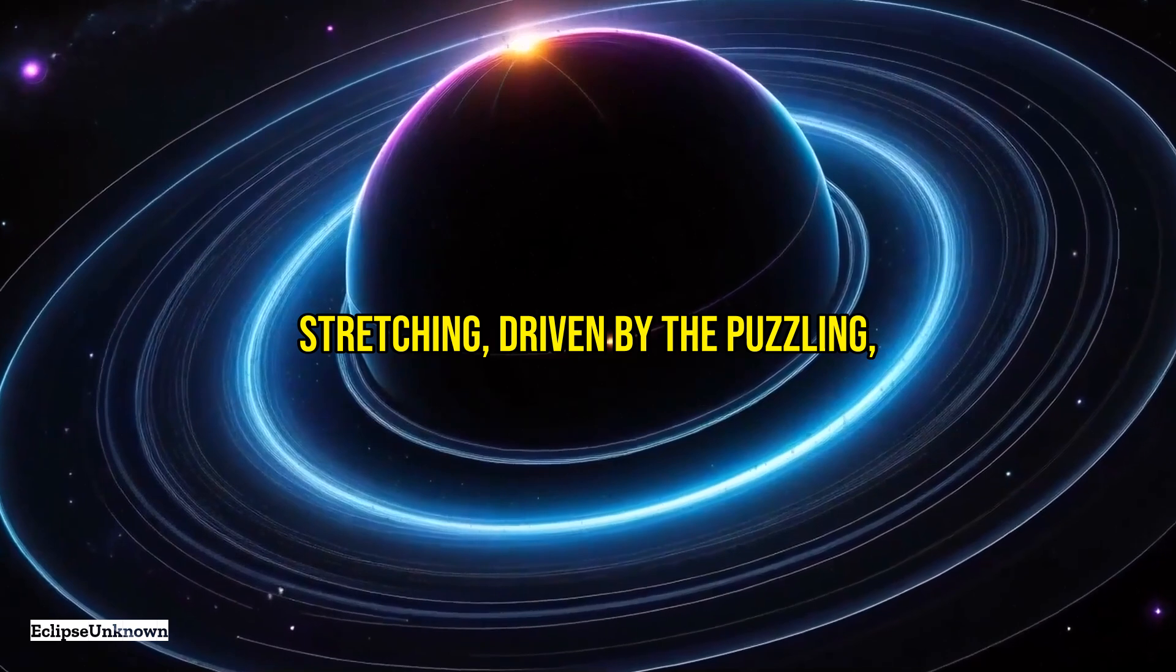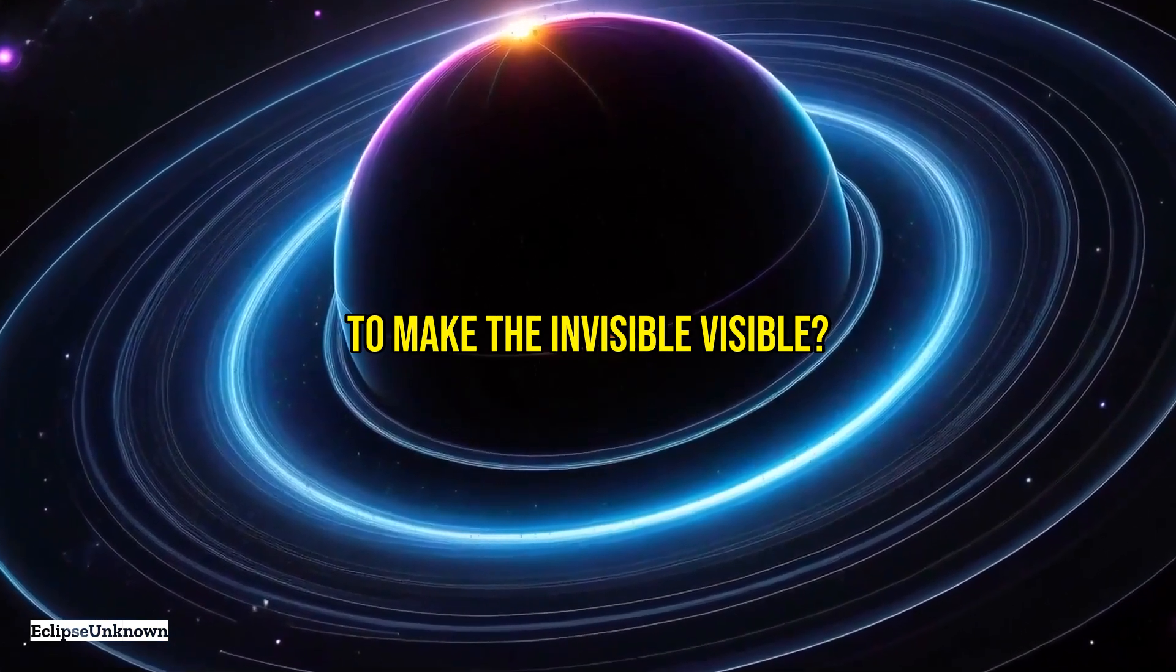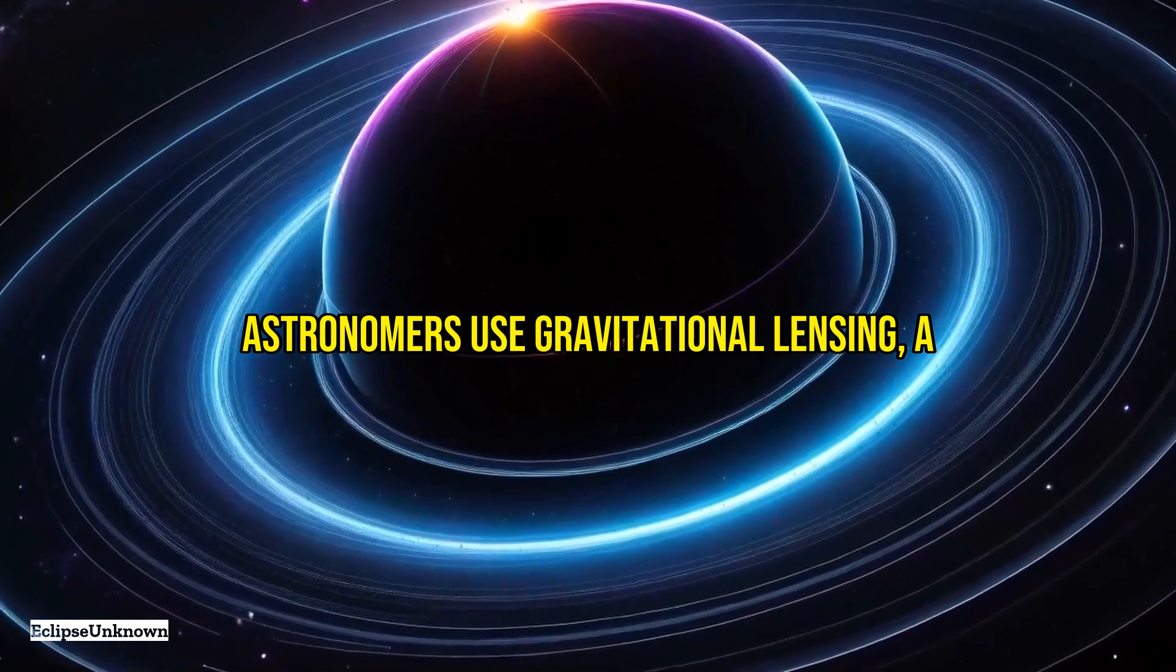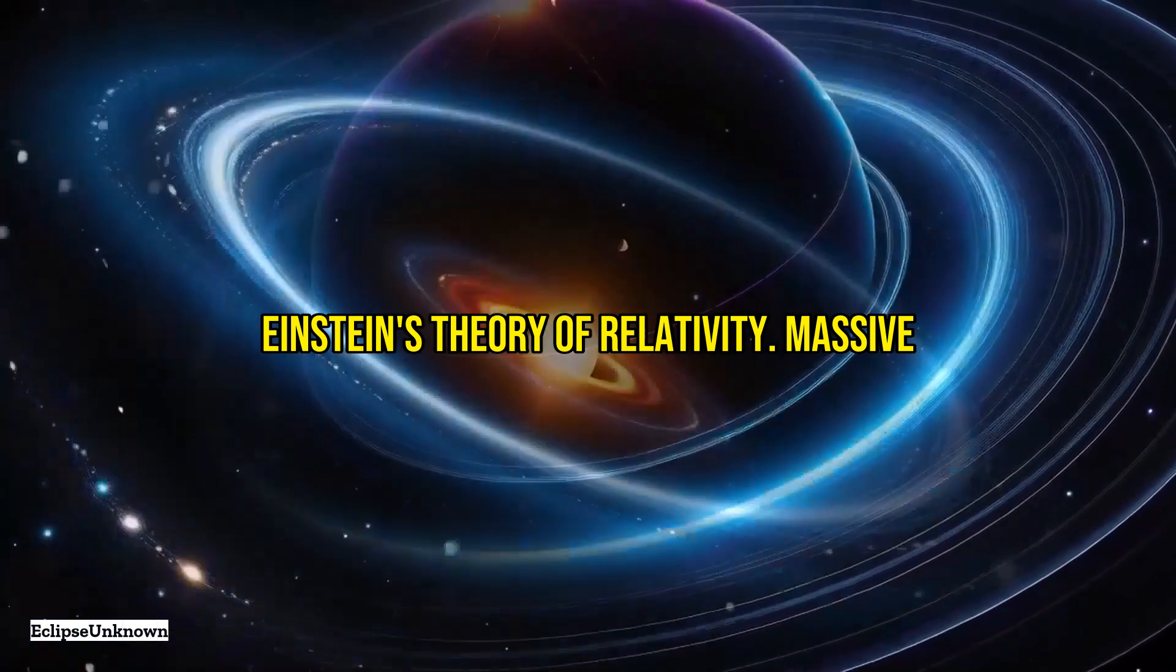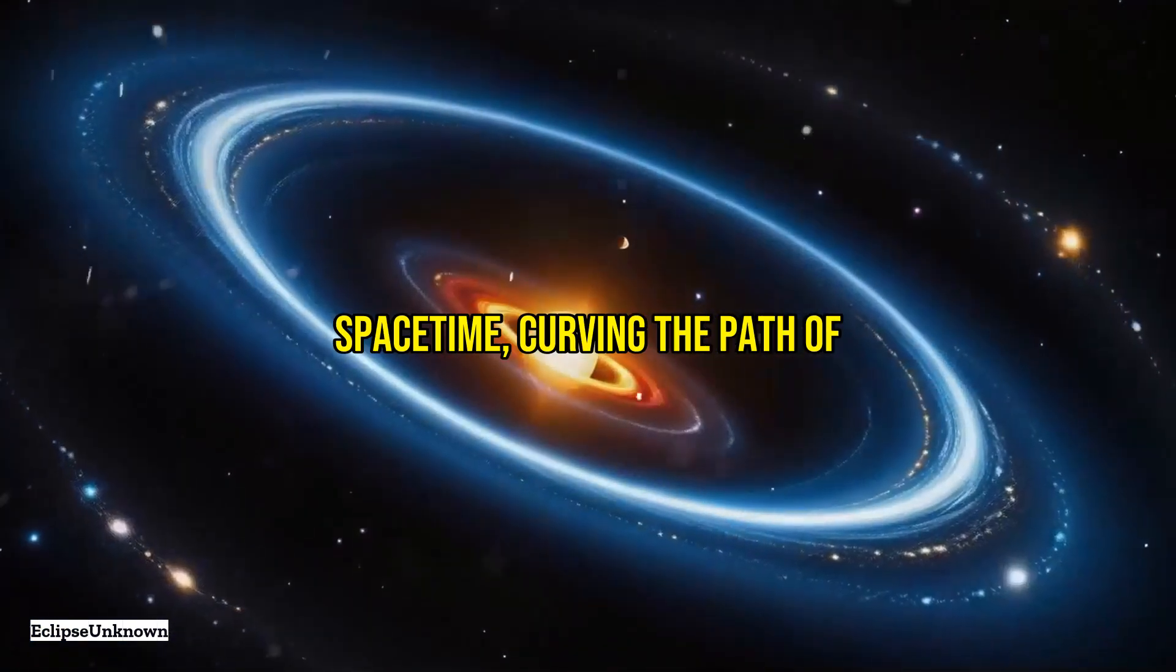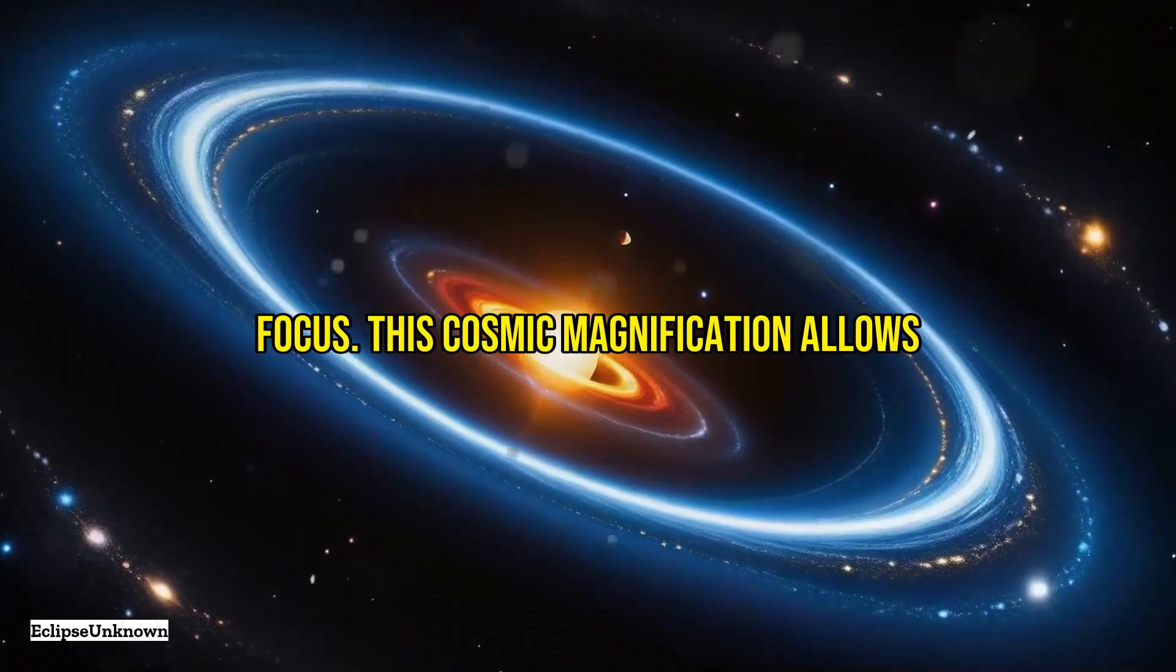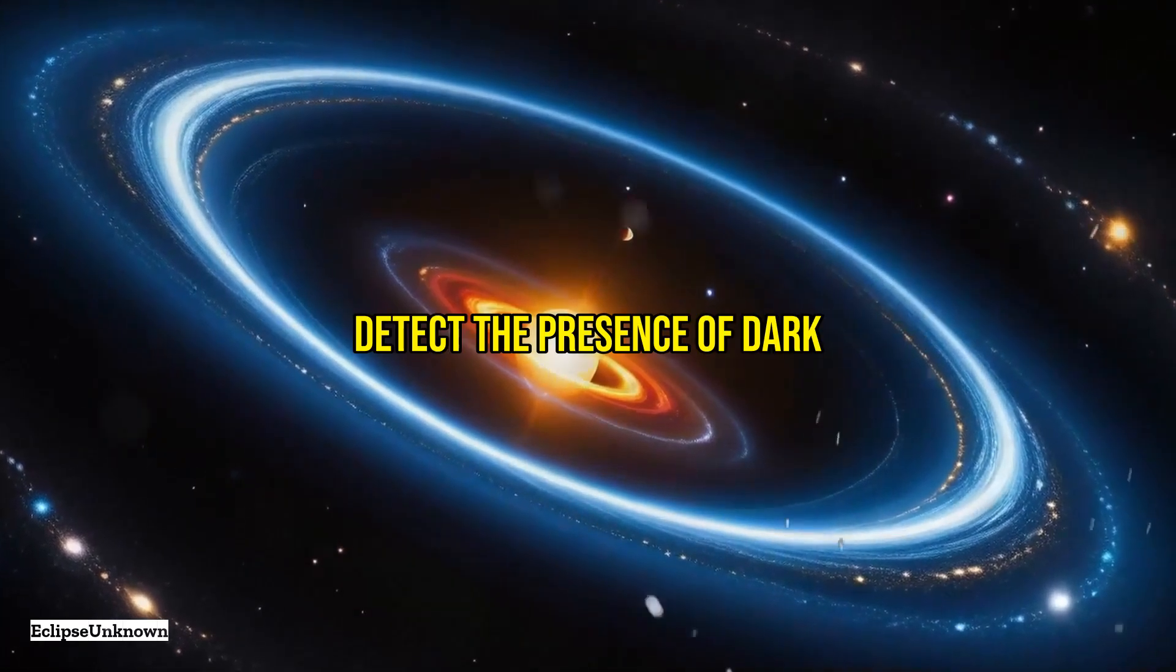But how do we strive to make the invisible visible? Astronomers use gravitational lensing, a phenomenon predicted by Einstein's theory of relativity. Massive objects bend the fabric of space-time, curving the path of light around them much like a lens bending light to focus. This cosmic magnification allows us to detect the presence of dark matter as it distorts the light from distant galaxies.